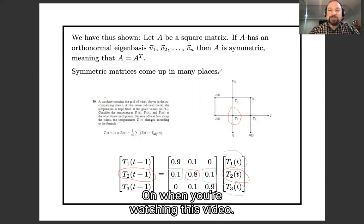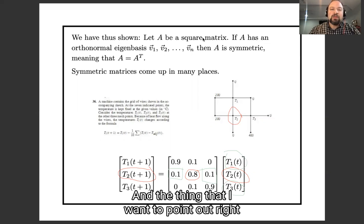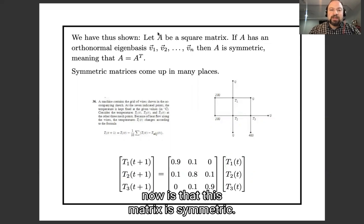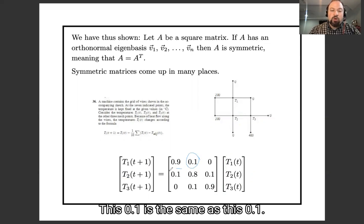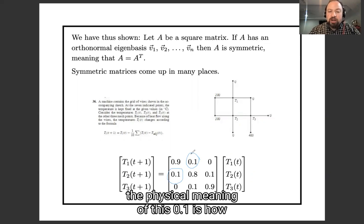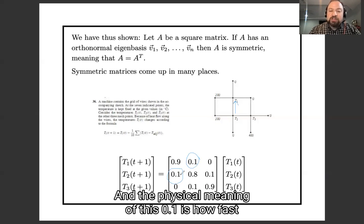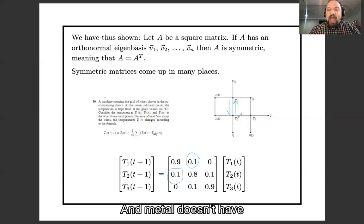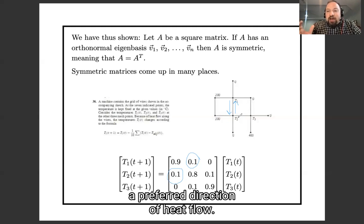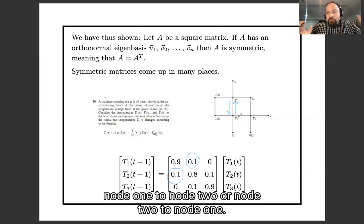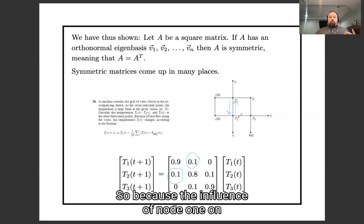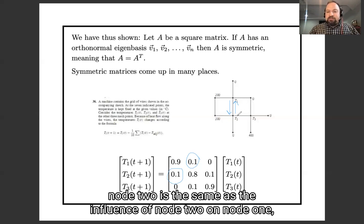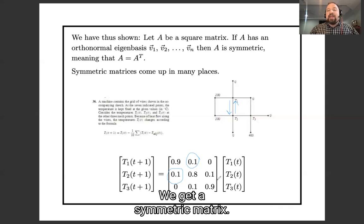The thing I want to point out is that this matrix is symmetric. This 0.1 is the same as that 0.1. The reason is that the physical meaning of this 0.1 is how fast heat flows from node two to node one. Metal doesn't have a preferred direction of heat flow — heat flows equally well from node one to node two or node two to node one. Because the influence of node one on node two is the same as the influence of node two on node one, we get a symmetric matrix.